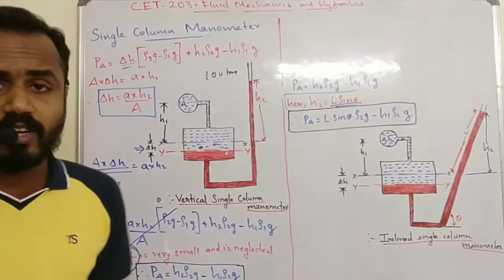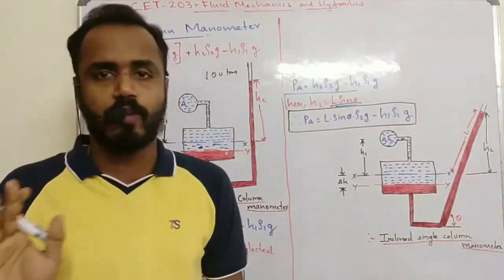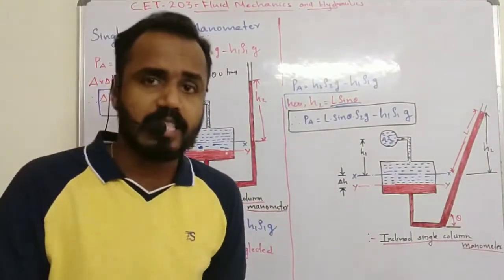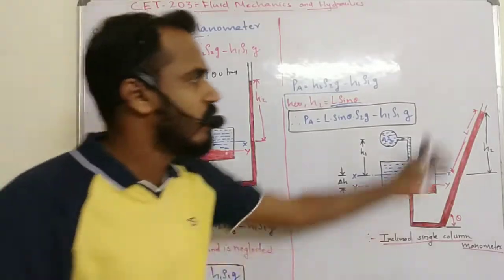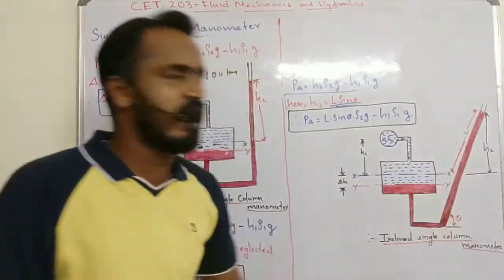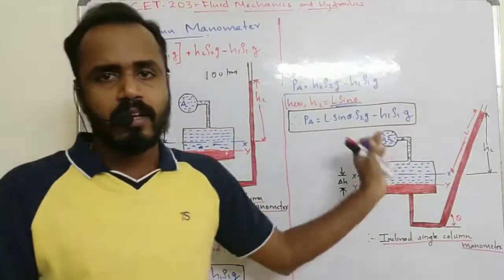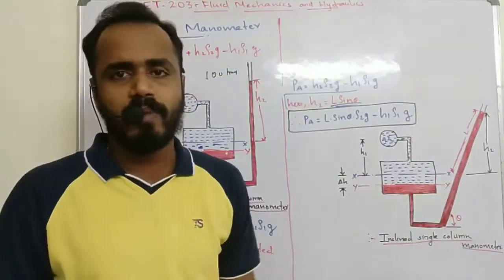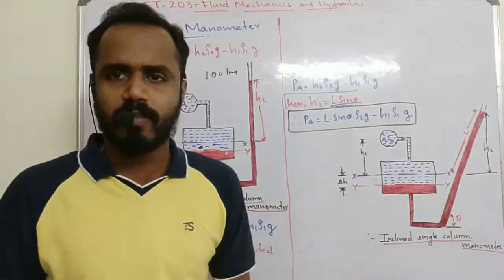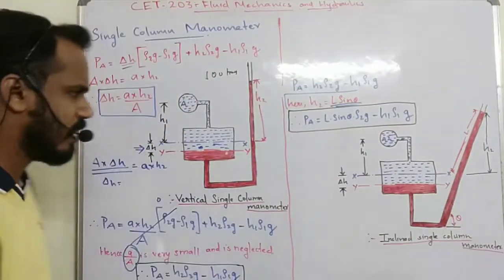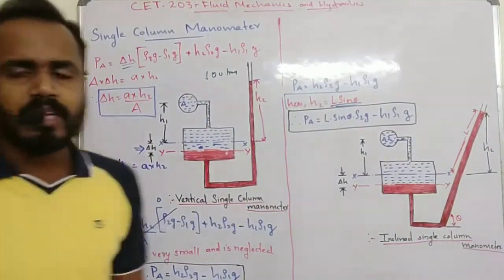For the vertical single column manometer and inclined single column manometer: in the inclined case, you place the tube at an angle. That covers the single column manometer.